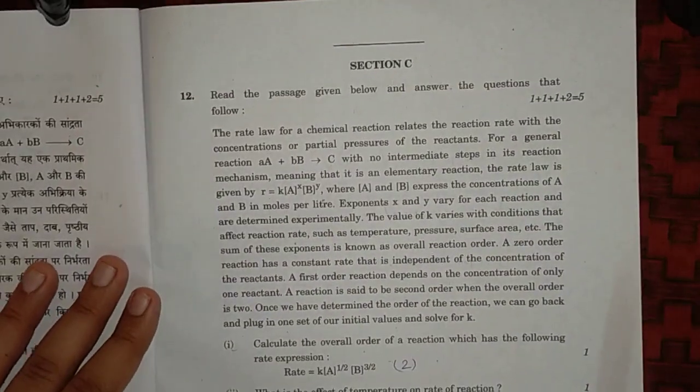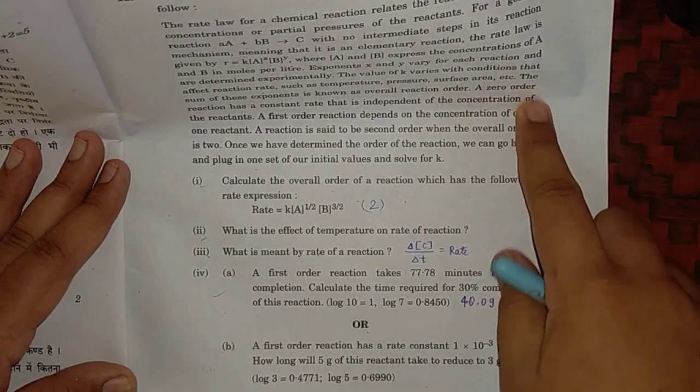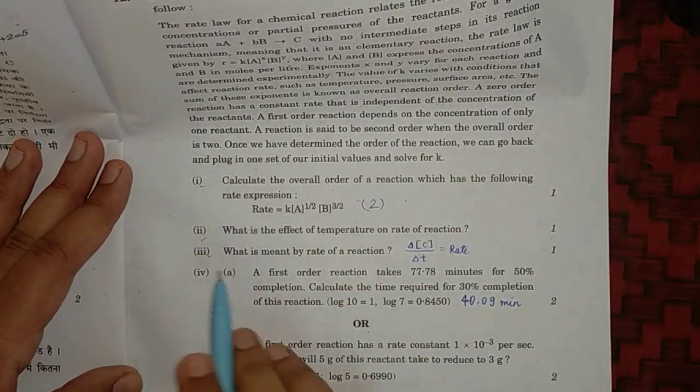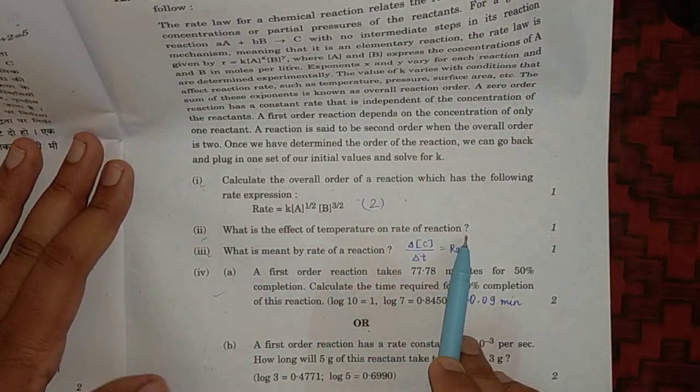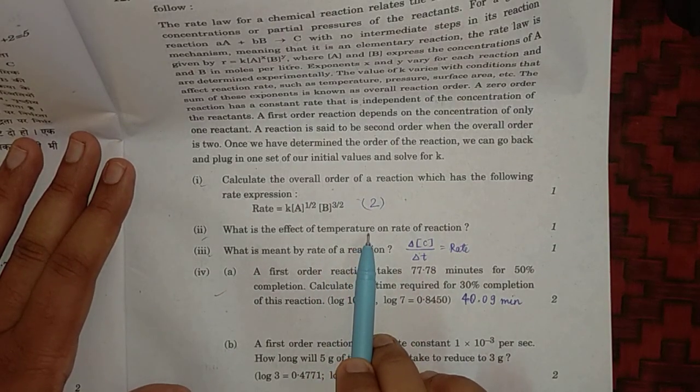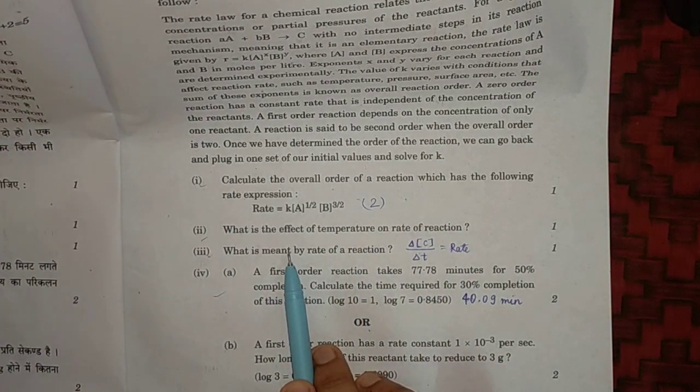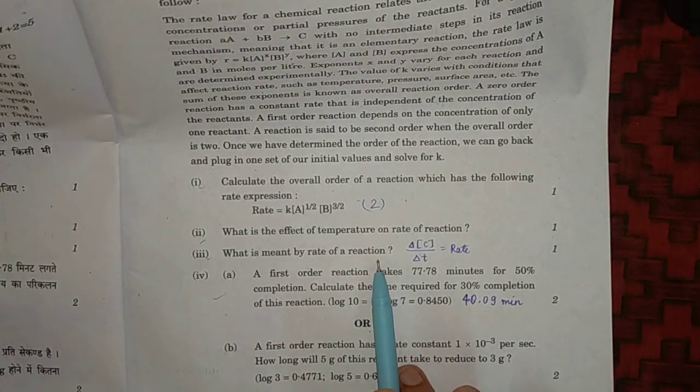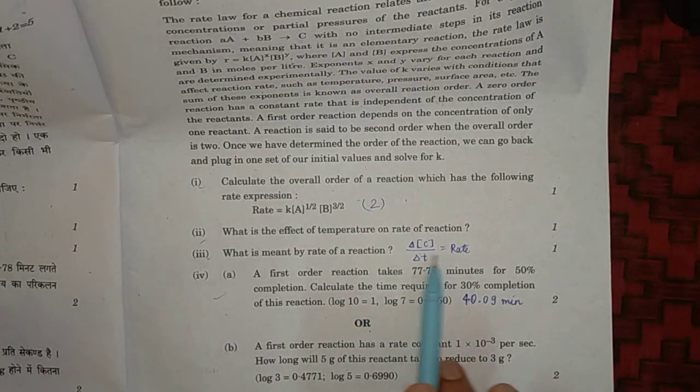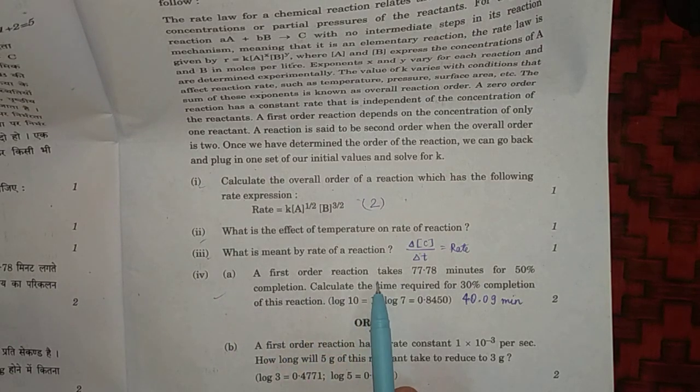Question number 12, Section C: calculate the overall order of reaction. Here the overall order of reaction comes out to be 2. What is the effect of temperature on rate of reaction? Rate of reaction increases with increase in temperature. After every 10 degree increase in temperature, rate of reaction almost doubles. What is meant by rate of reaction? Rate of reaction is defined as change in concentration in unit time.